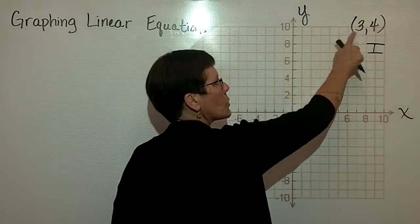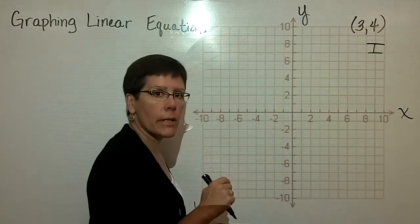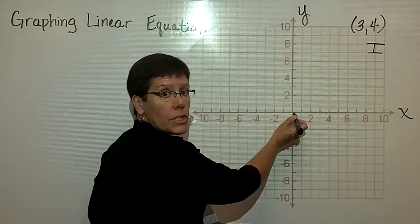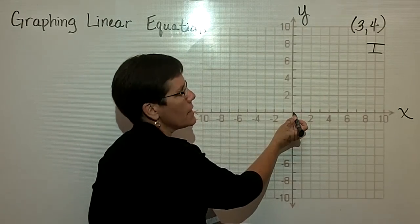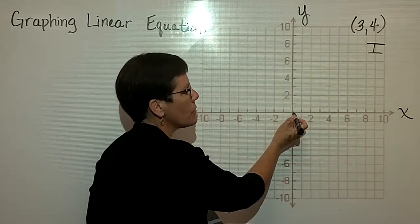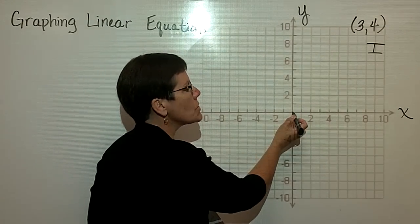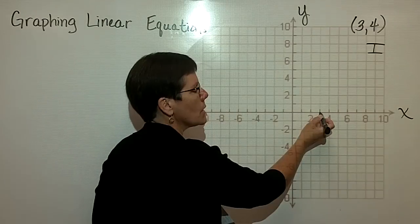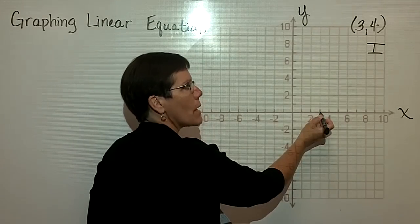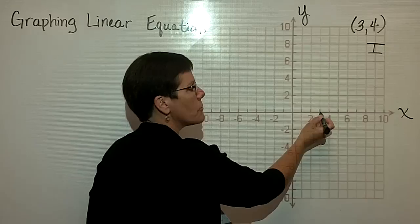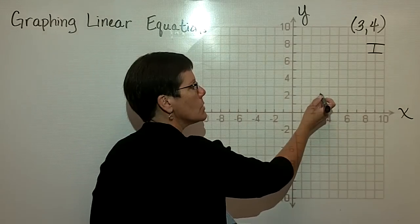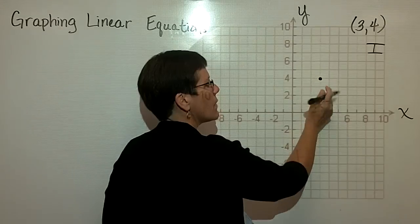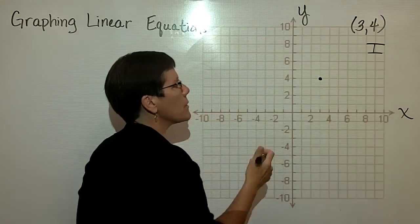To locate this ordered pair in the rectangular coordinate system, I start at the origin at (0, 0). In the x direction I go a positive 3 units to the right — 1, 2, 3 units. In the y direction I go a positive 4 units upward — 1, 2, 3, 4 — and I put a dot there representing that ordered pair.